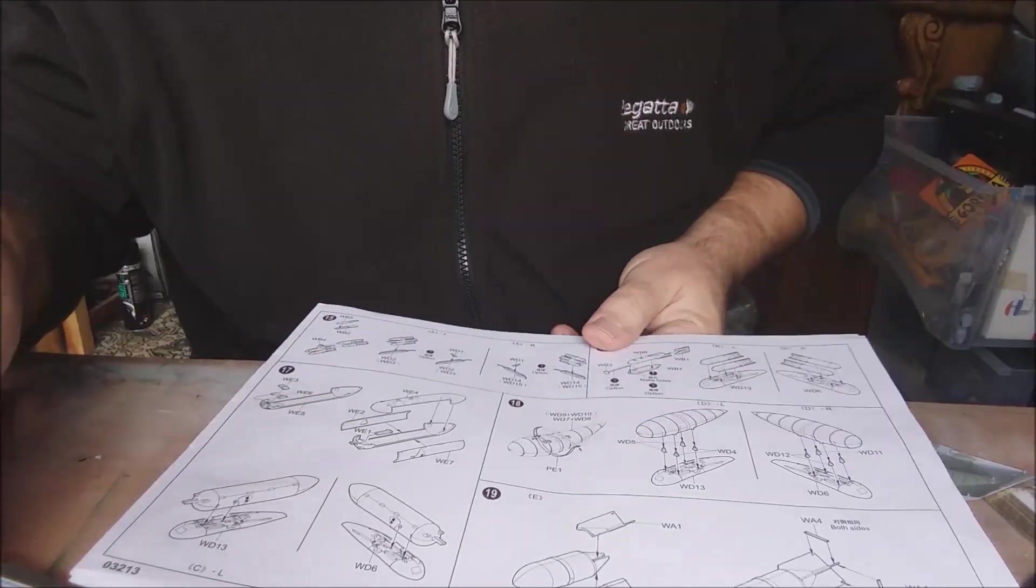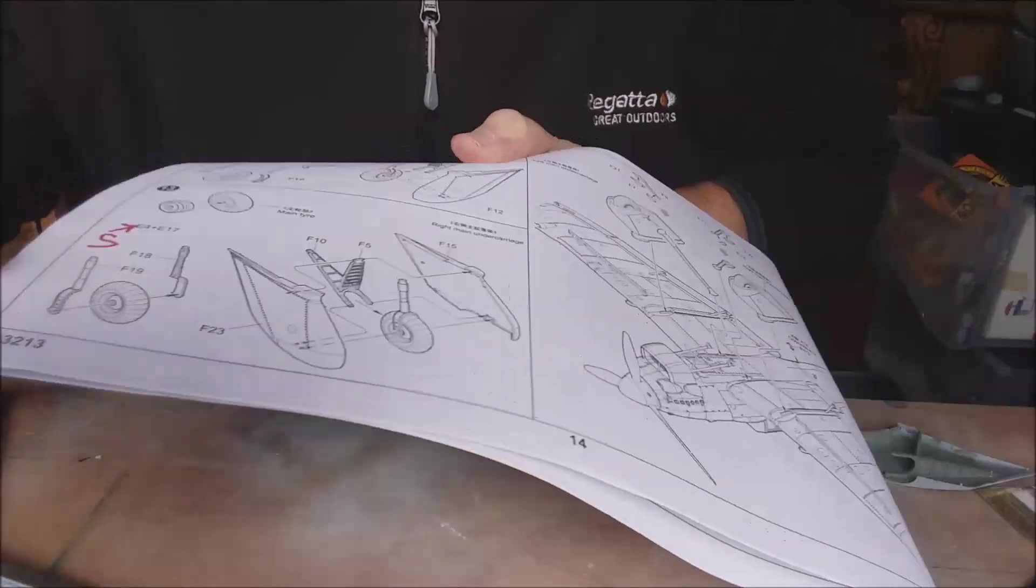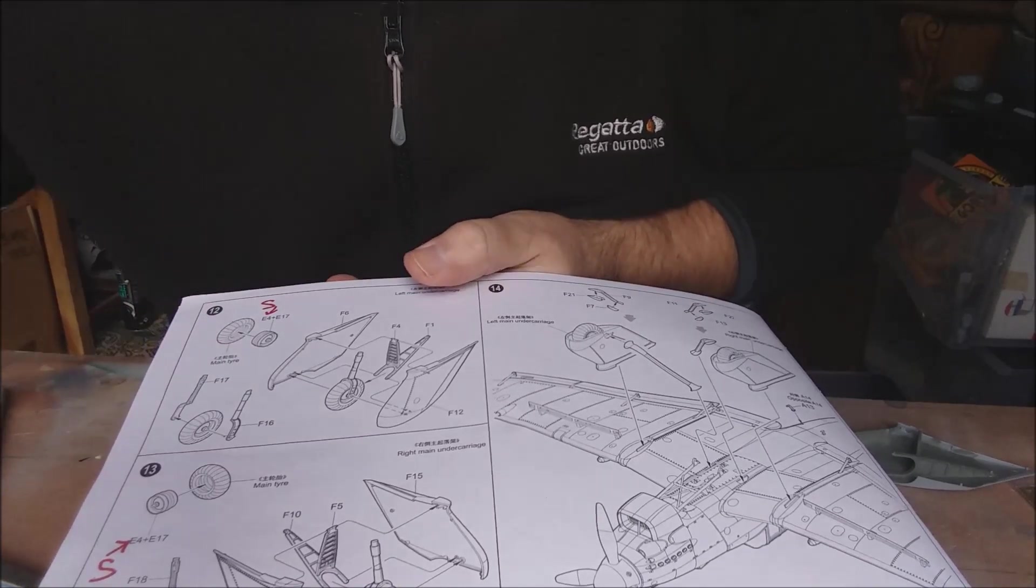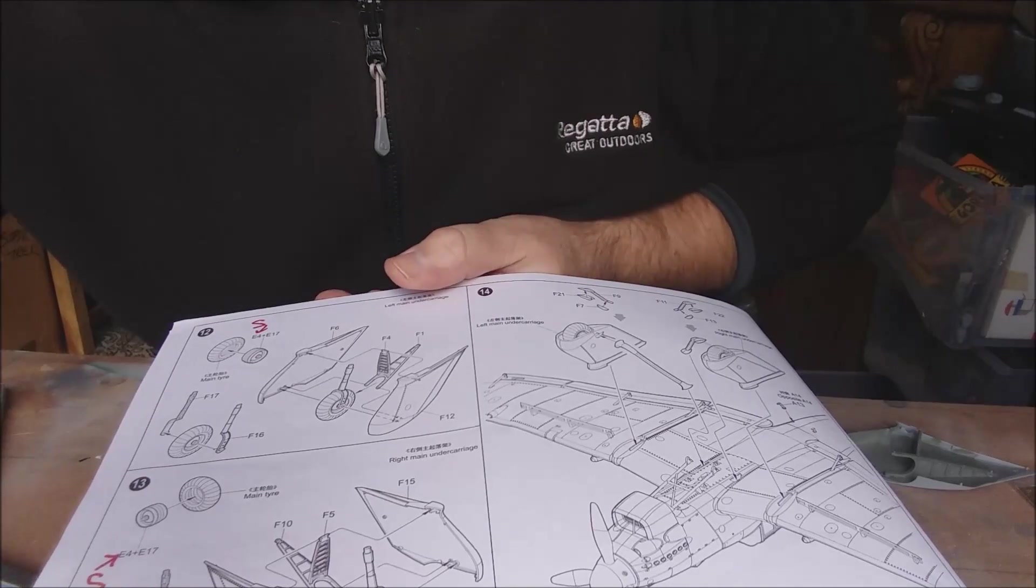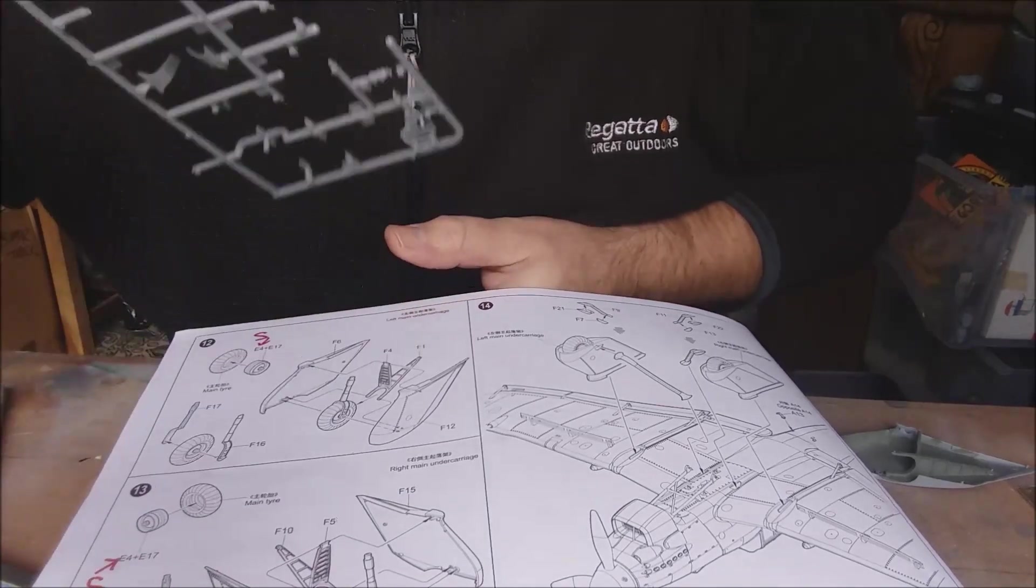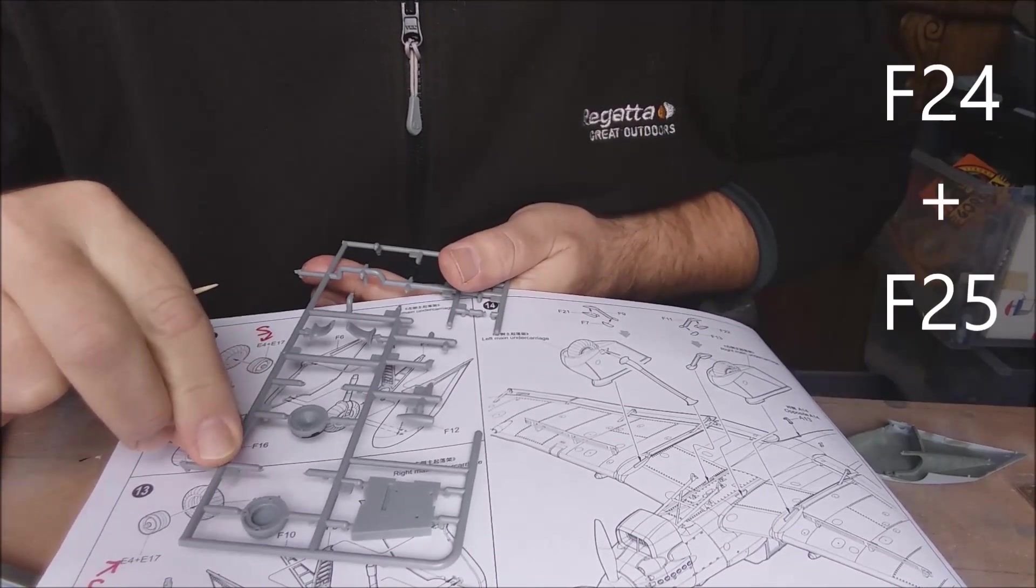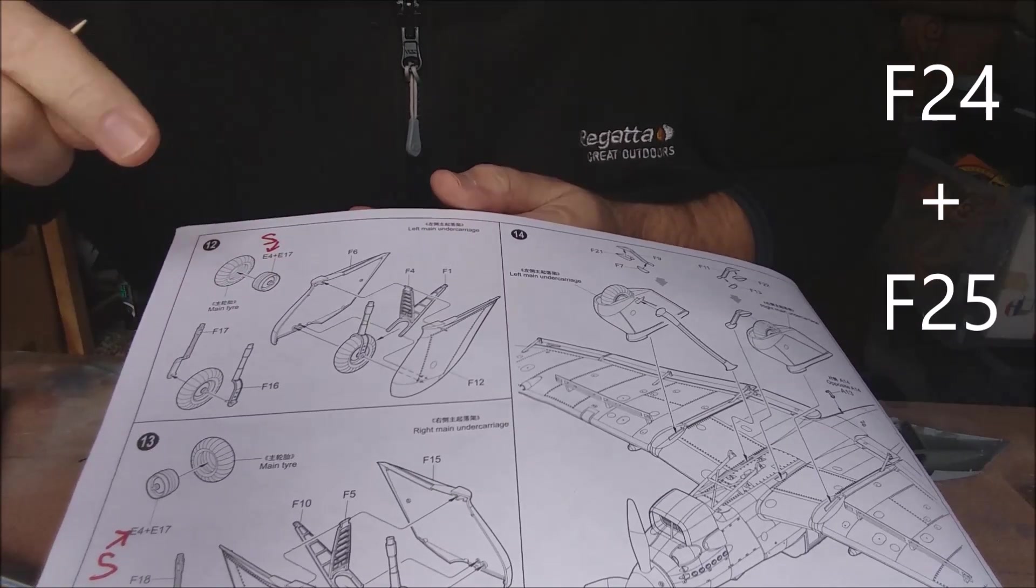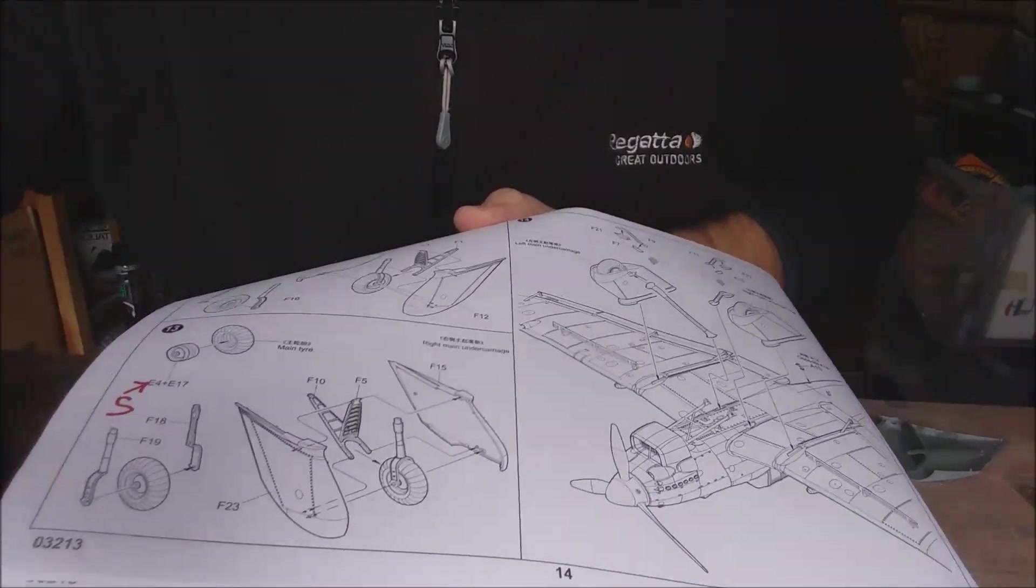And it's not as the instructions say E4 and E17. It's actually F24 and 25. They are the ones F24 and 25 that you want.